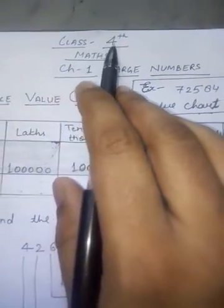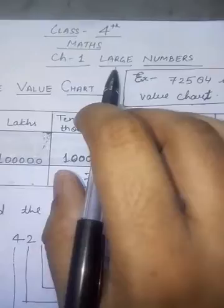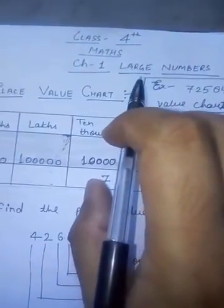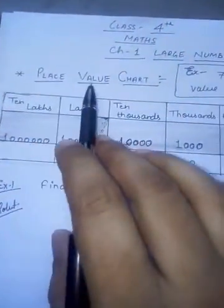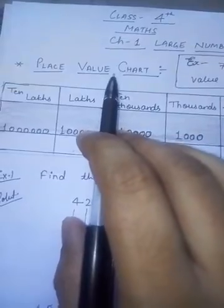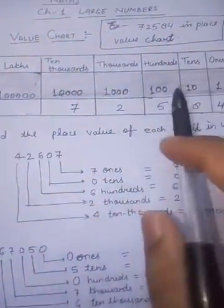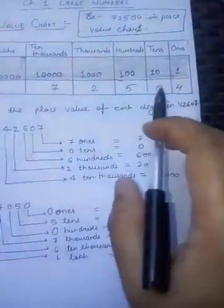Let's start Class 4, our first chapter: Large Numbers. In this chapter, the first topic is the place value chart. How do we form the place value chart? Let's discuss. First of all, make the columns like this.